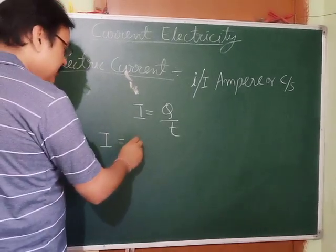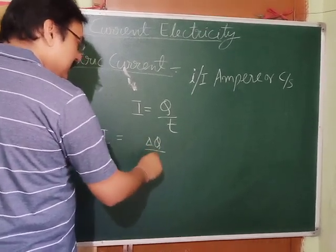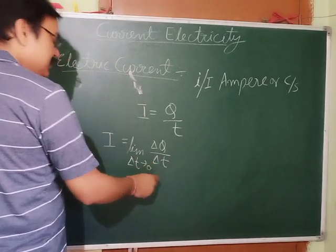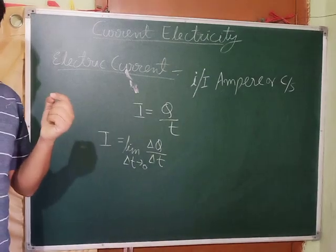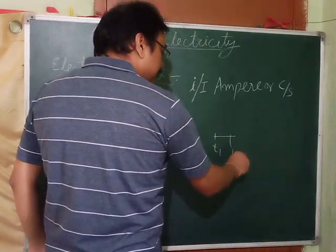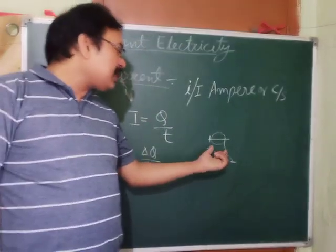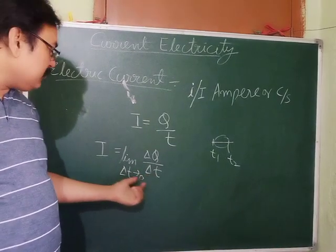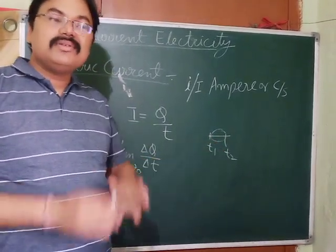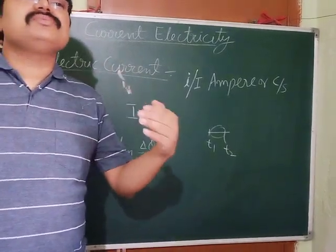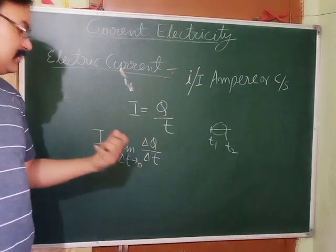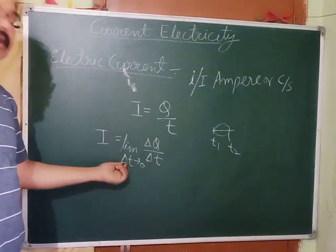Instantaneous current is given by the limit as delta-t tends to zero of delta-Q over delta-t. This time interval is very very small — tending to zero means they are not actually coinciding with each other, just next to each other. So delta-t will be very small but not zero. When this time is very small, we write it as i equals to dQ upon dt.